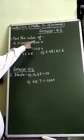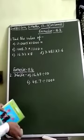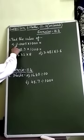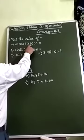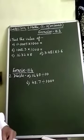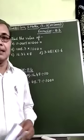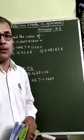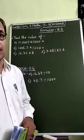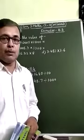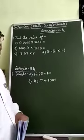First question is find the value of. Children, look at A1: 0.0005 into 1000. Children, in multiplication of decimal numbers by 10, 100, 1000, etc., you have to move decimal point to the right side.